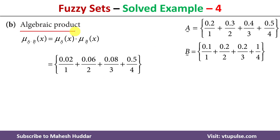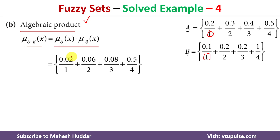Moving to the second one — algebraic product, denoted by this symbol. The algebraic product is a very simple process: we take the multiplication of the membership value of x in fuzzy set A and fuzzy set B. For element 1, the membership values are 0.2 and 0.1; multiplying gives 0.02. For element 2, 0.3 and 0.2 gives 0.06, and so on.